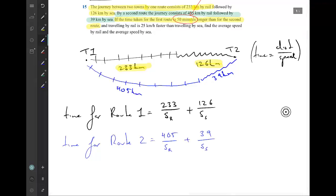Finally, in our information, we're told that traveling by rail is 25 kilometers an hour faster than traveling by sea. So we can actually remove one of these variables here.